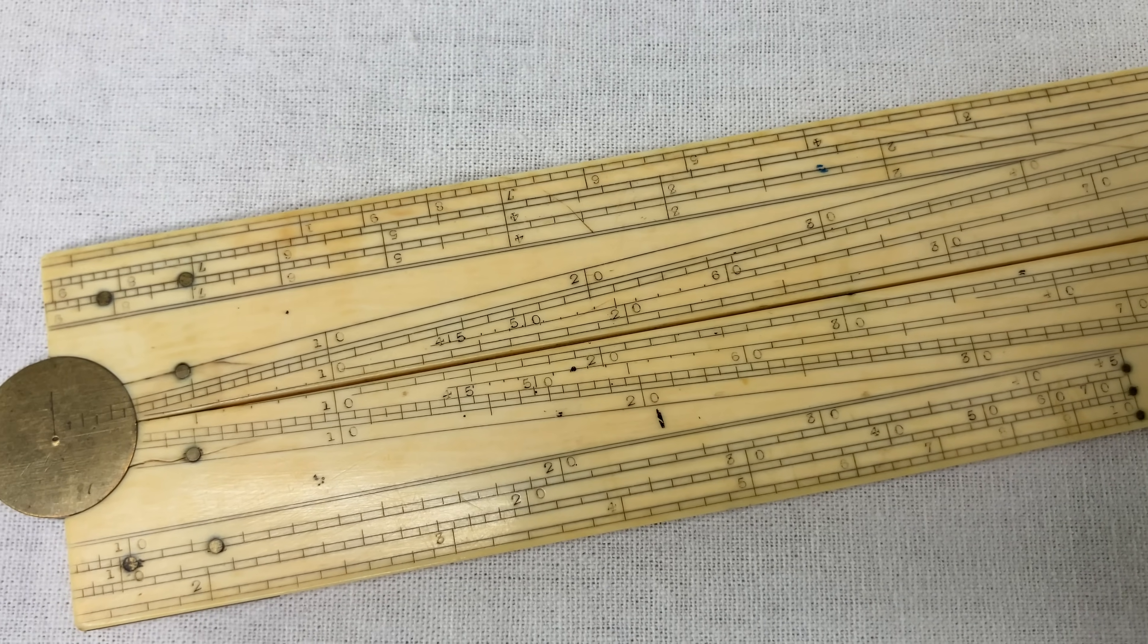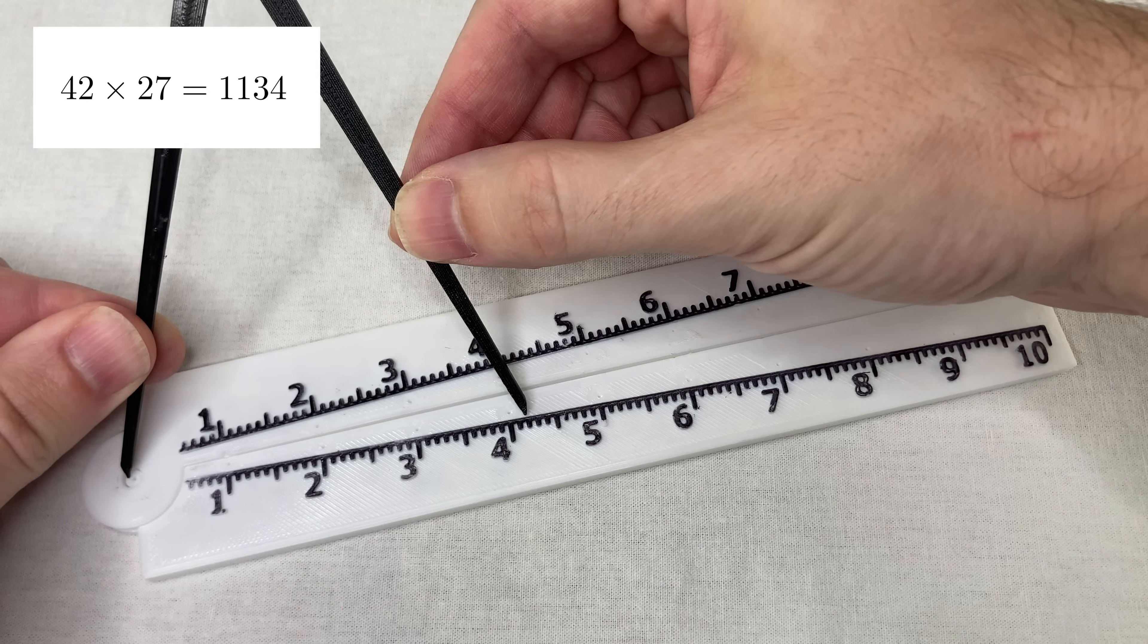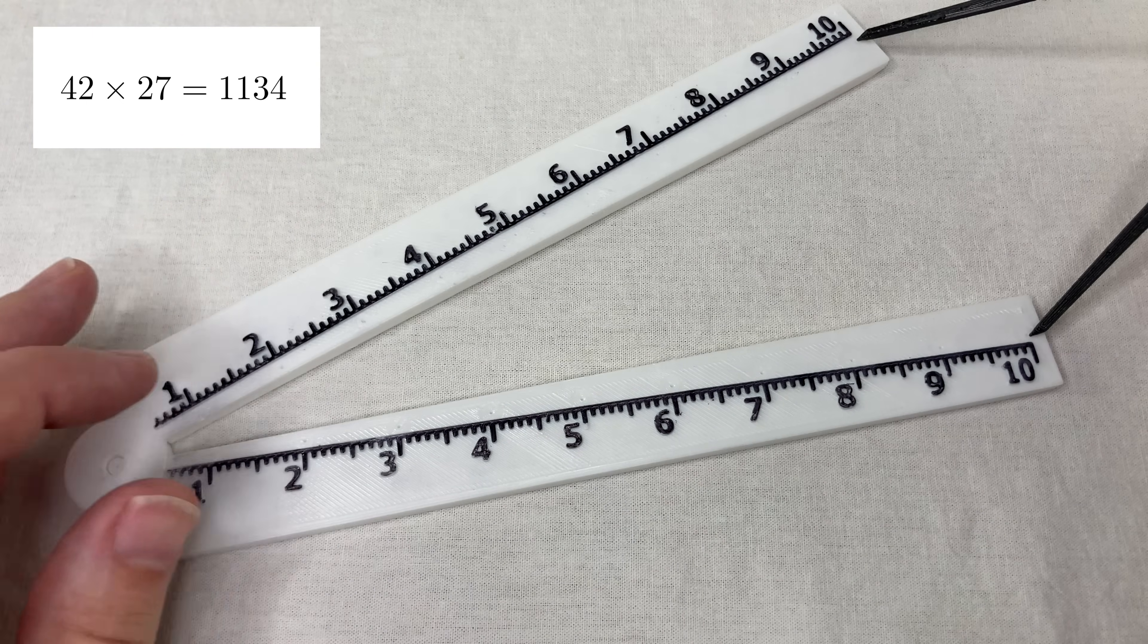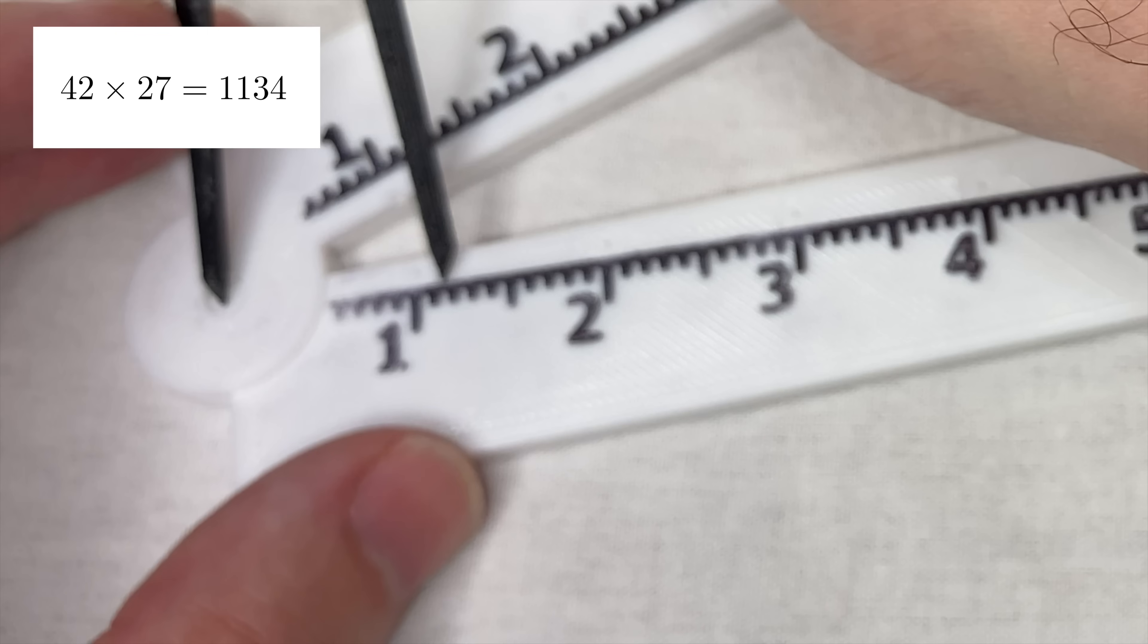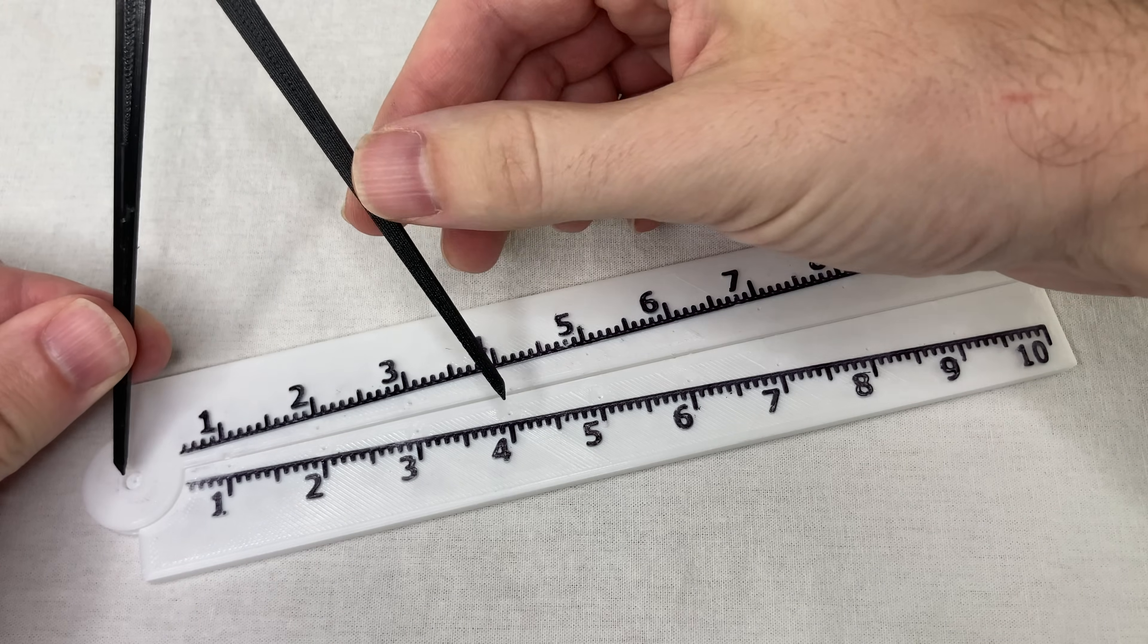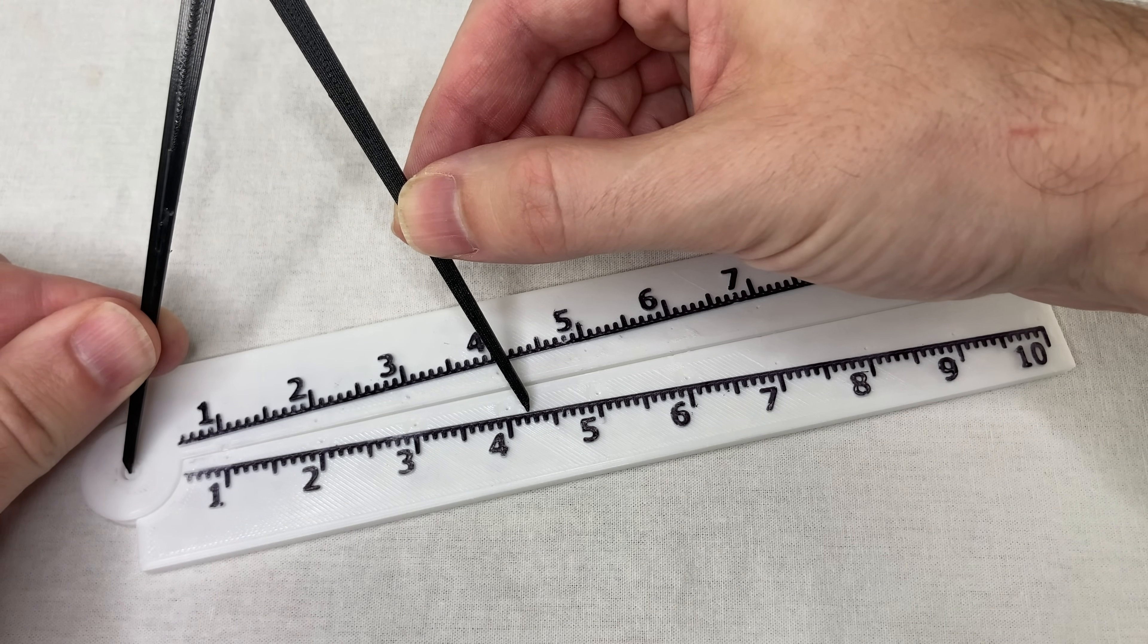You can do even bigger numbers if you want, like 42 times 27. I measure to 42 on the scale, and open the sector that far, then stretch to 27, and measure it again, and it looks a little more than 11. That's 1100, of course. This is, you know, an analog calculator. A lot of times the answers are going to be in between. You just got to approximate it.